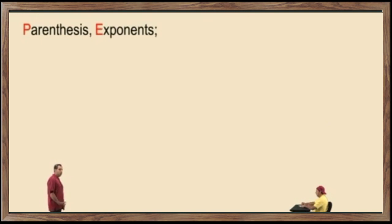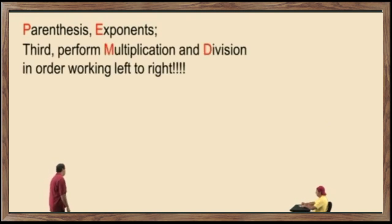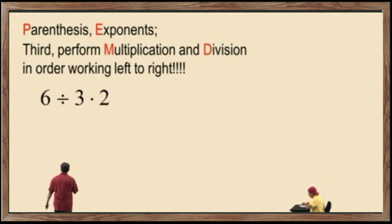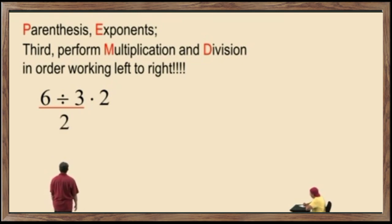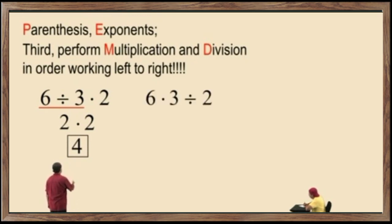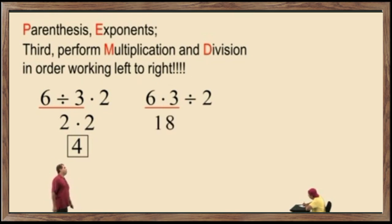We have parentheses and exponents. Our third category is multiplication and division. Perform multiplication and division in order, working left to right, whichever comes first. With this expression, we have a division and a multiplication. The division comes first working left to right, so you perform division before multiplication. 6 divided by 3 is 2, and 2 times 2 is 4. That is the correct answer. Here we have multiplication and division — multiplication comes first working left to right. 6 times 3 is 18. 18 divided by 2 is 9.